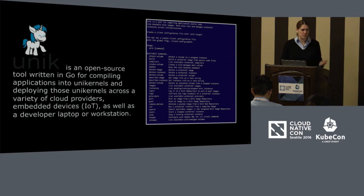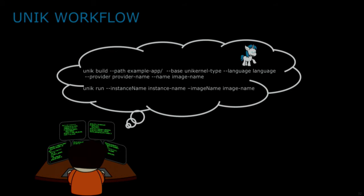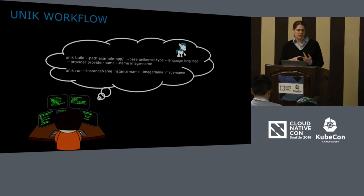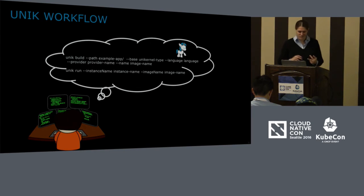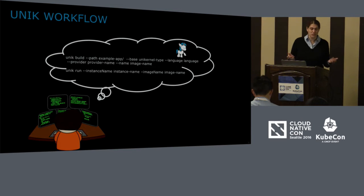Unik is written in Go, it's an open source project. How does it work? You do a 'unik build' and build an image — like Docker. You give it the application code, tell it which unikernel type you want (Mirage OS, for example), which language your application is in, and which provider — AWS, local VirtualBox, Google Cloud. Then give a name to the image. The magic happens, you get an image, and you just run it. That simple.